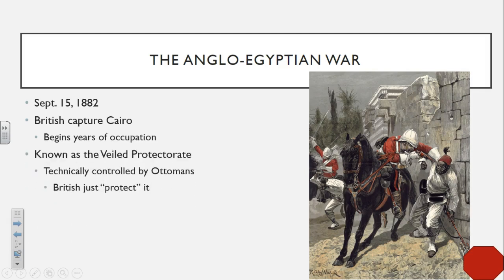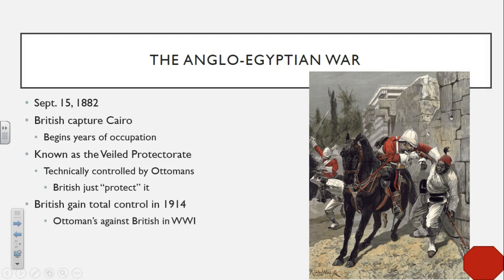The British are going to start controlling Egypt, and this is going to be known as the Veiled Protectorate. The region is technically controlled by the Ottoman Turks from Turkey; however, the British are the ones actually controlling the region and protecting it — hence the name Veiled Protectorate. So it's kind of British, kind of Ottoman, and its own little thing. The British are going to gain total control in 1914, when the Ottomans join against the British in World War I.